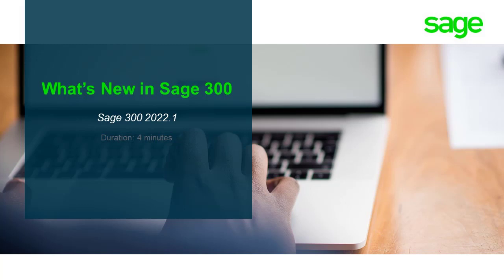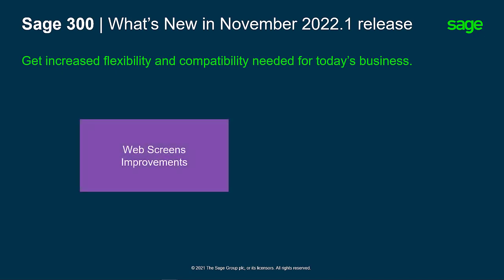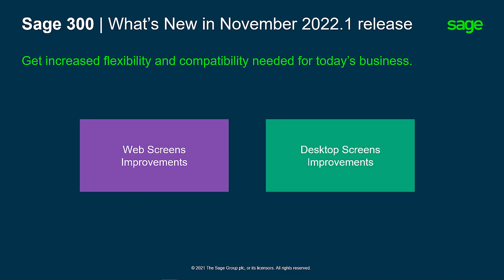Welcome to this video. Over the next few minutes, we will show you what's new in Sage 300 version 2022 Product Update 1. Sage 300 2022 Product Update 1 offers users exciting features that guarantee increased flexibility and capability needed for today's business. This latest version presents additional functionalities and superior user experience through web screens improvements and desktop screens improvements.